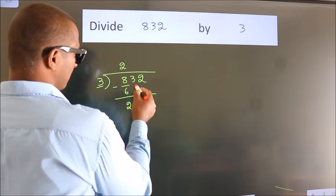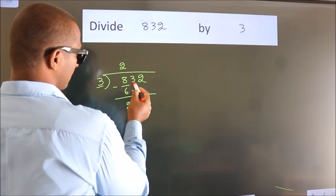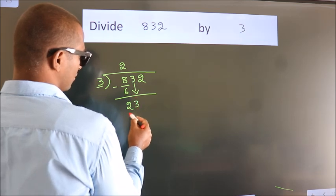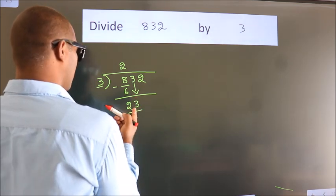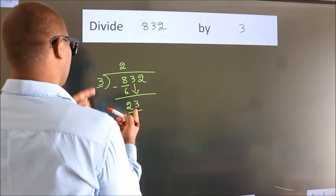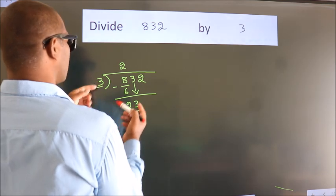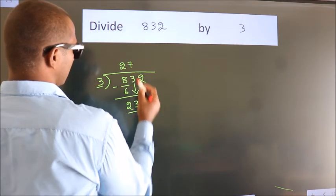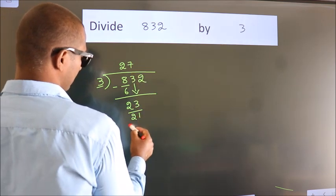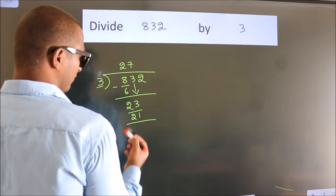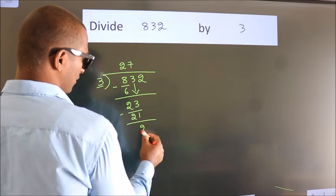After this, bring down the beside number. So 3 down, making 23. A number close to 23 in the 3 table is 3 times 7 is 21. Now we subtract. We get 2.